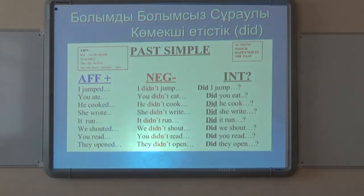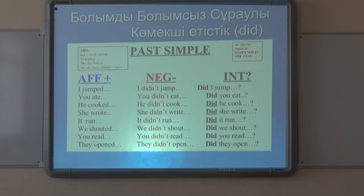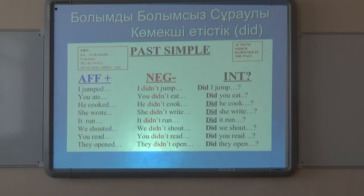There are three types of sentences: affirmative, negative, and interrogative. To make a negative sentence from an affirmative one, we use the auxiliary verb 'did' and add the particle 'not.' To make an interrogative sentence, we put the auxiliary verb 'did' before the subject.